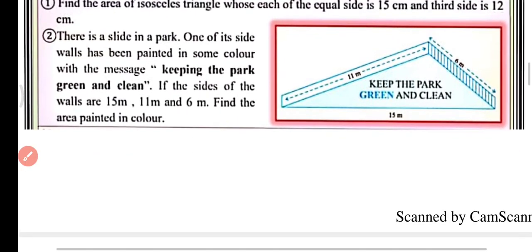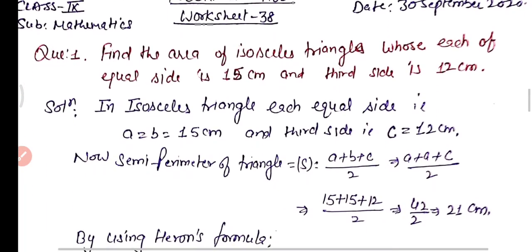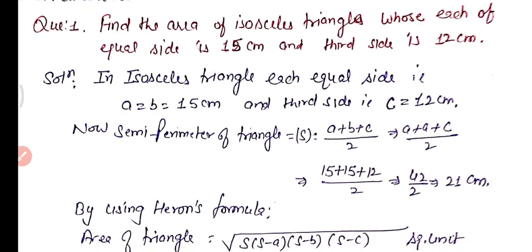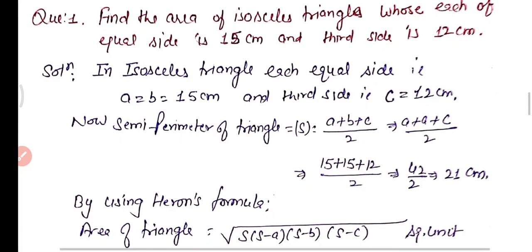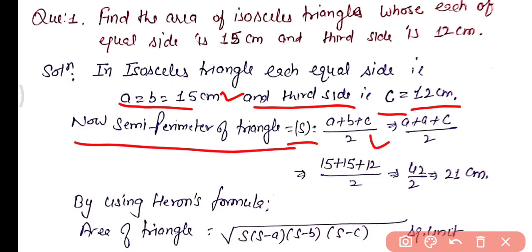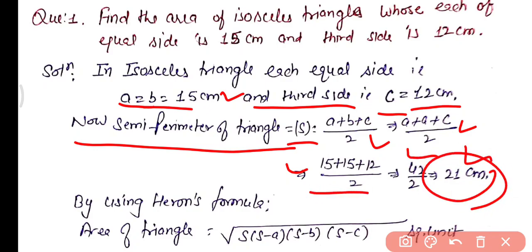Now let's move to the practice questions. The first question: find the area of an isosceles triangle whose equal sides are 15 cm and the third side is 12 cm. In an isosceles triangle, each equal side a = b = 15 cm, and the third side c = 12 cm. Semi-perimeter s = (a + b + c) / 2 = (15 + 15 + 12) / 2 = 42 / 2 = 21 cm.